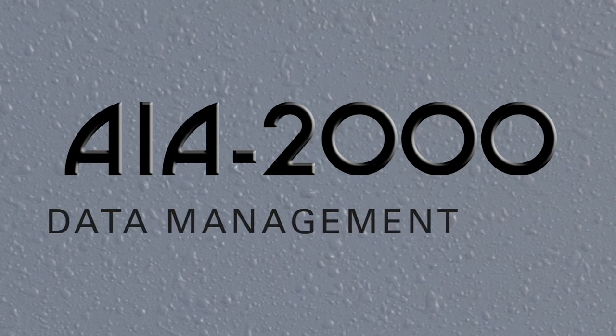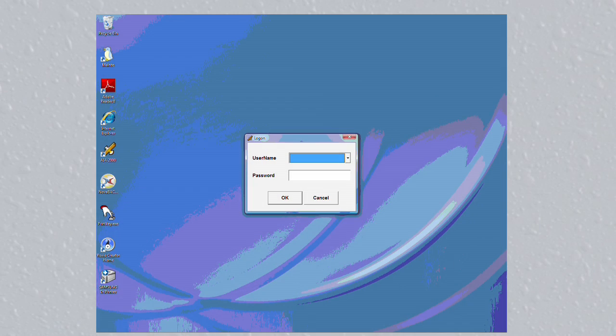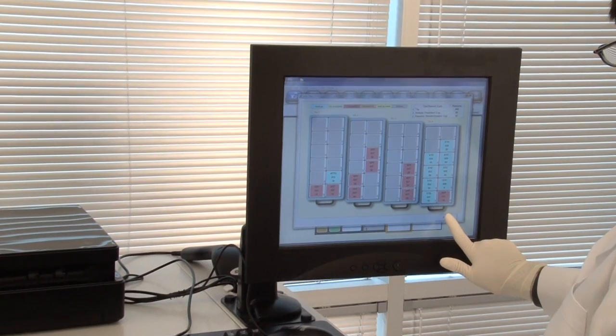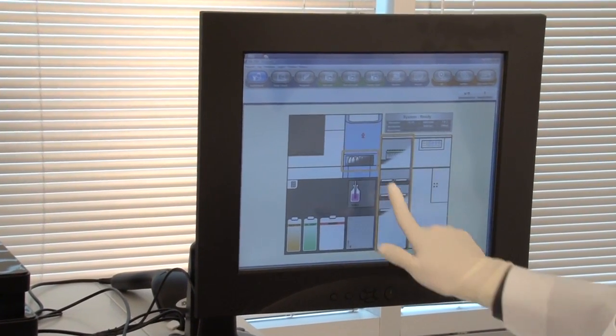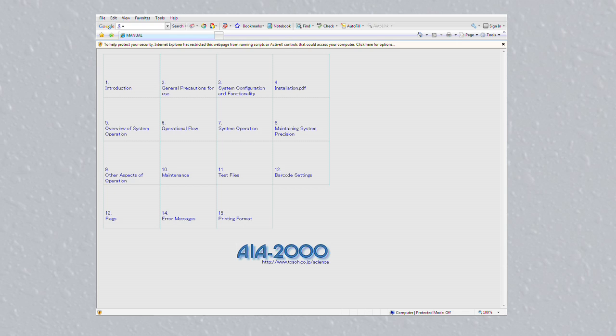The AIA-2000 can be bi-directionally interfaced to any LIS system. The software is Windows based and the touch screen monitor allows the operator to control operation from the screen. In addition, help screens are available providing onboard access to operational and troubleshooting questions.